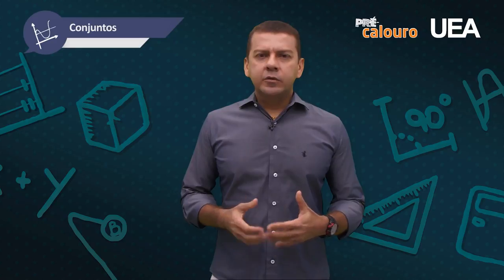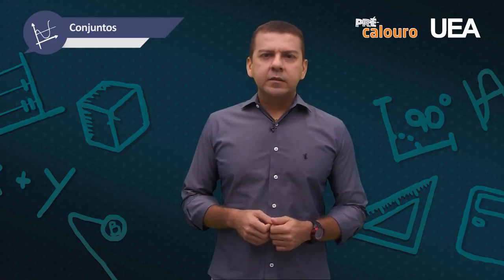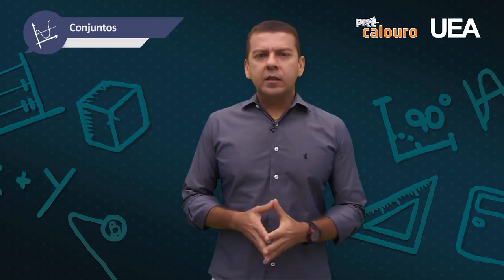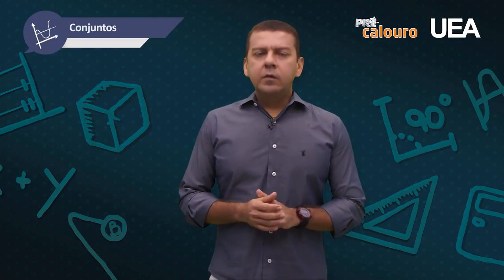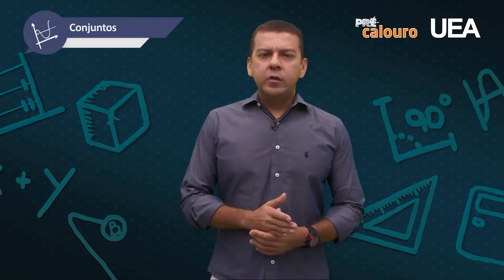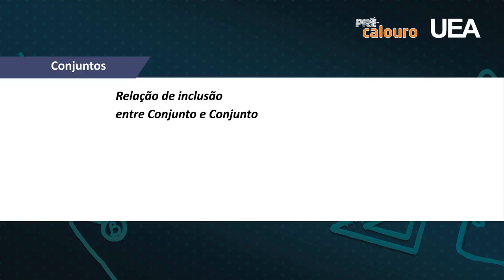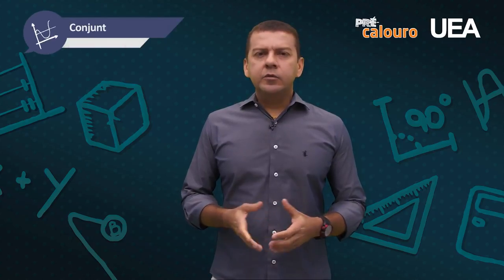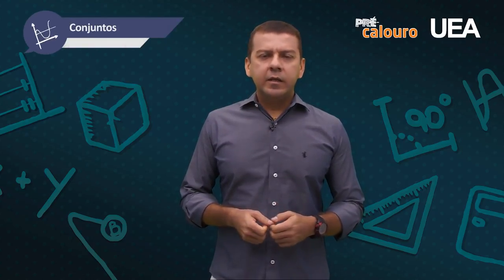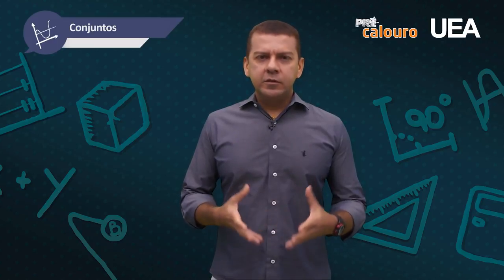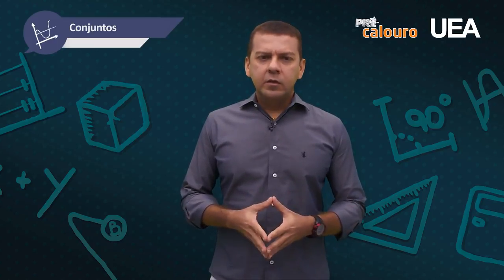Com esses conjuntos, trabalharemos duas relações importantes: as relações de pertinência e as relações de inclusão. Quando falamos de elemento e conjunto, referimo-nos à pertinência — um elemento pertence ou não a um conjunto. Quando falamos apenas entre conjuntos, temos a relação de inclusão — um conjunto está contido ou não em outro. Representaremos esses conjuntos através do diagrama de Venn, que é uma forma ilustrativa que ajuda muito na resolução de exercícios.